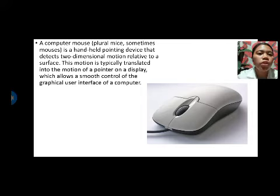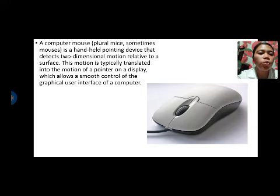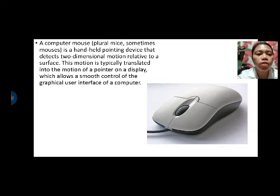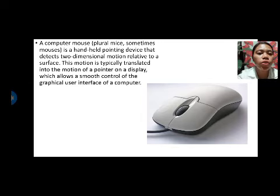A computer mouse, plural mice or sometimes mouses, is a hand-held pointing device that detects two-dimensional motion relative to a surface. This motion is typically translated into the motion of a pointer on a display, which allows smooth control of the graphical user interface of a computer.